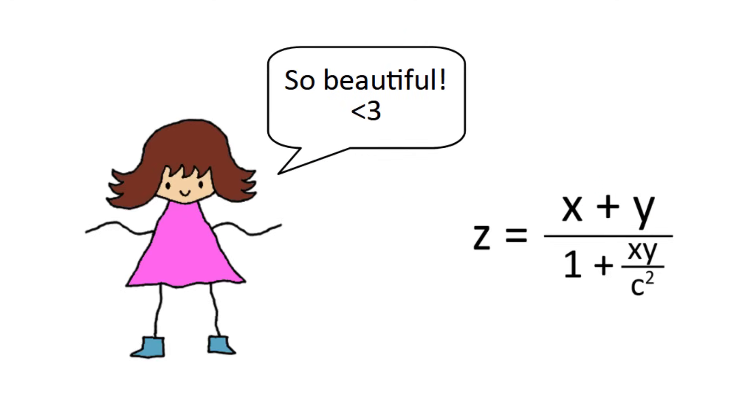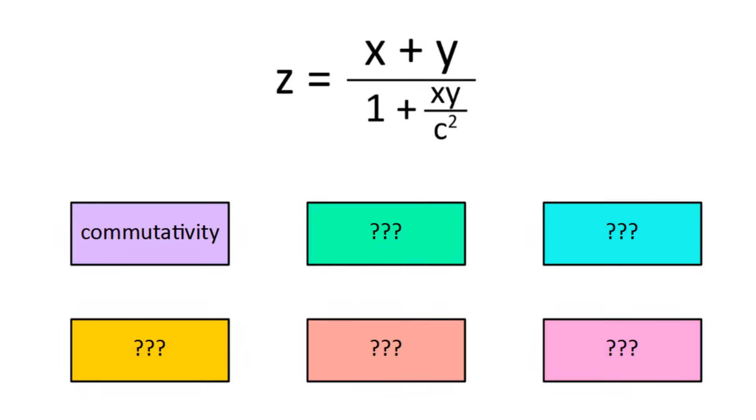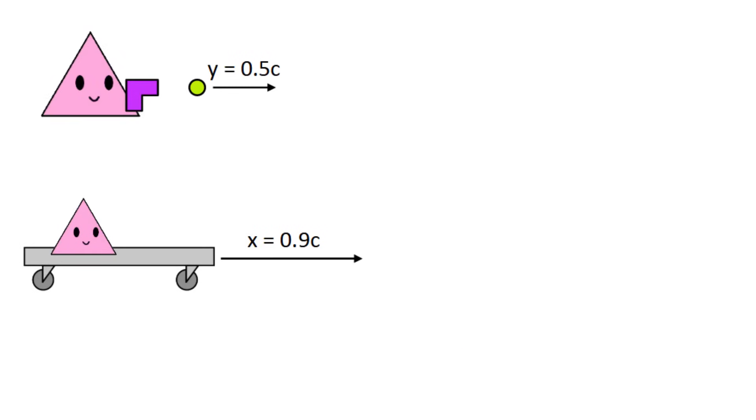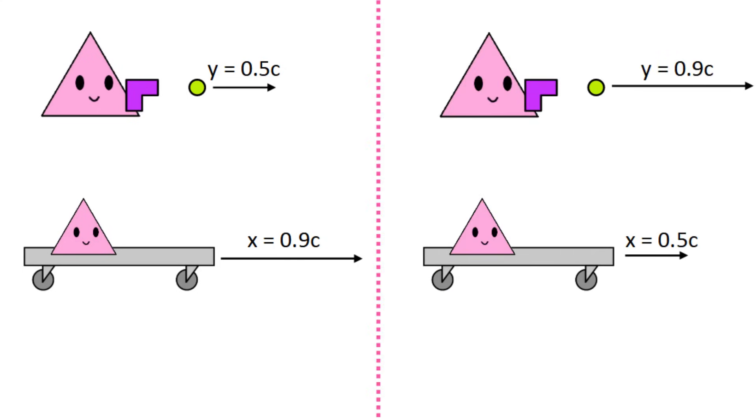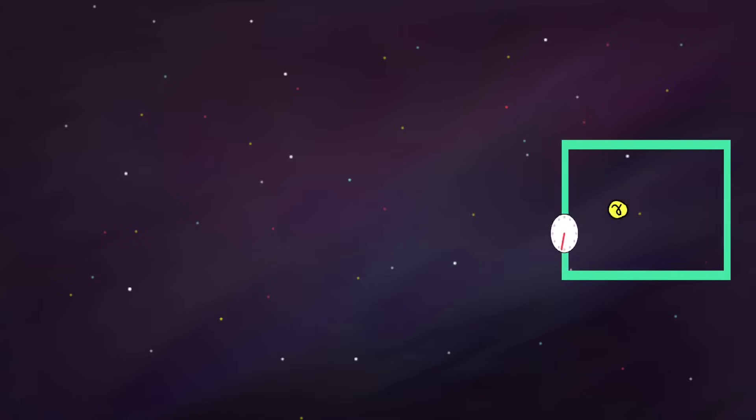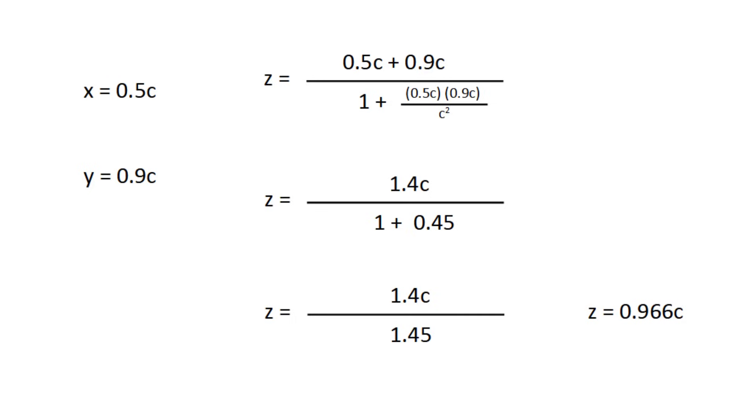This formula for relativistic addition of velocities might just be one of my favorite physics equations ever due to all of its nice features. First of all, it's commutative with x and y, so you can switch them and the equation doesn't change. This means a 0.5c projectile fired from a 0.9c ship, and vice versa, have the same velocity, which I think is pretty unexpected considering the derivation process. But the reasoning makes sense when you consider what the formula actually does. It adds x and y and then reduces that number using a term involving their product.